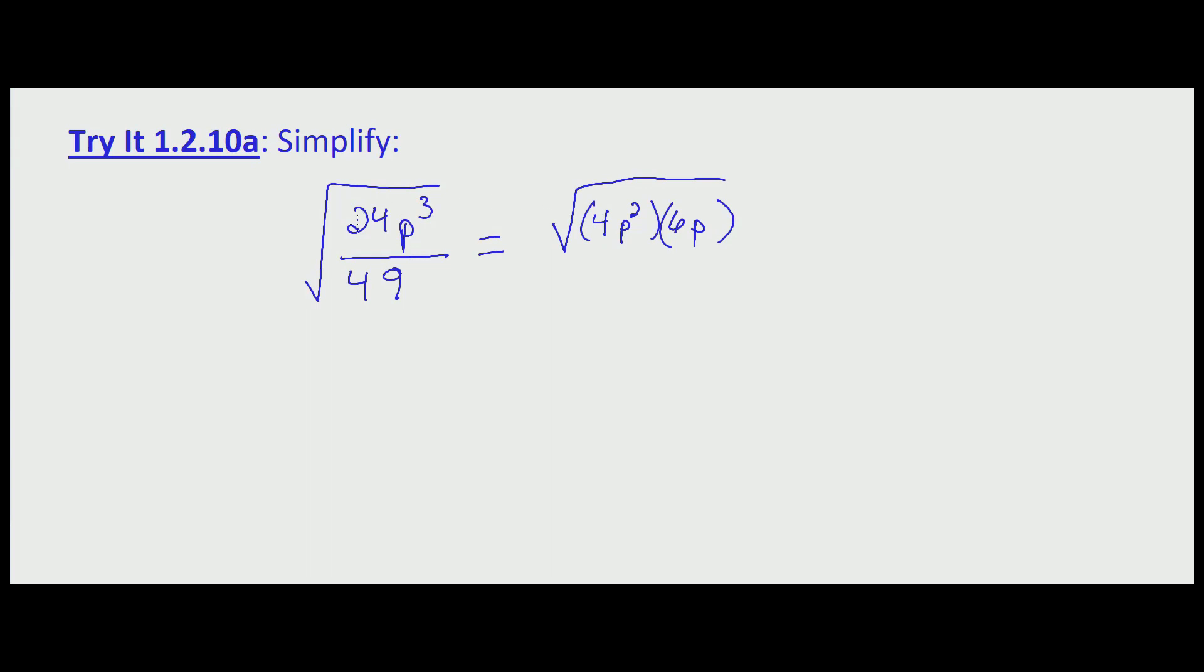4 times 6 is our original 24. P squared times p is our original p cubed. That's all over the square root of 49.